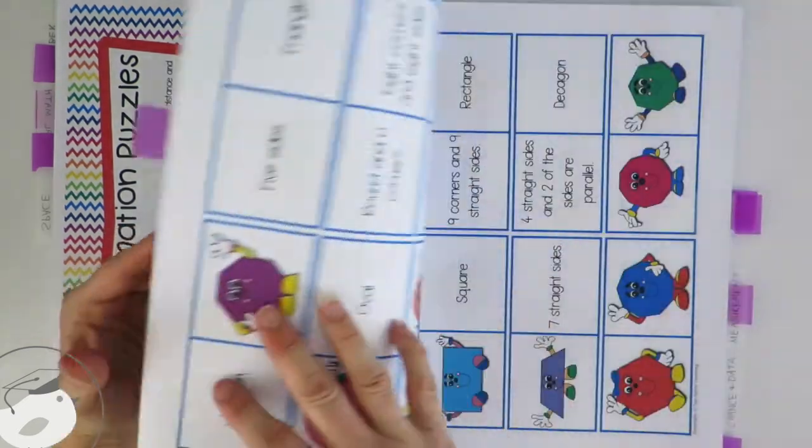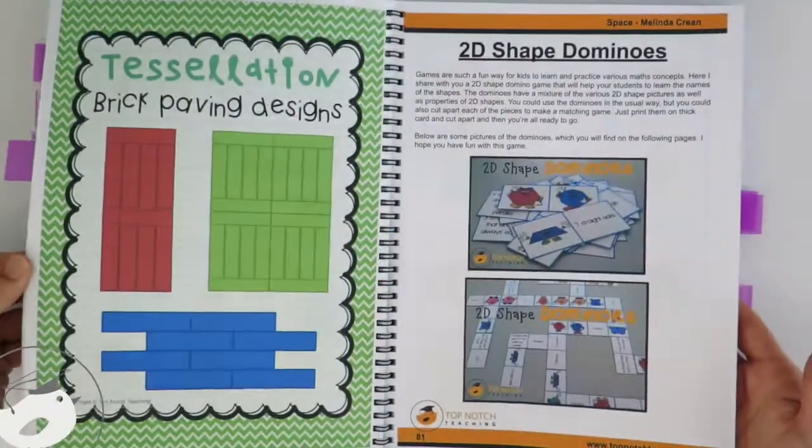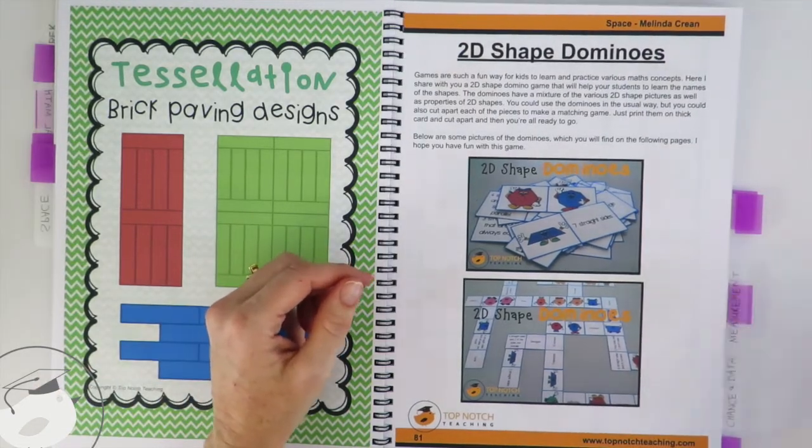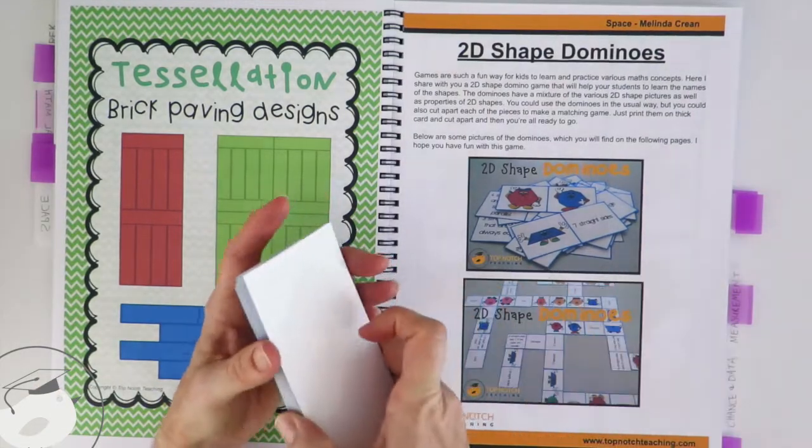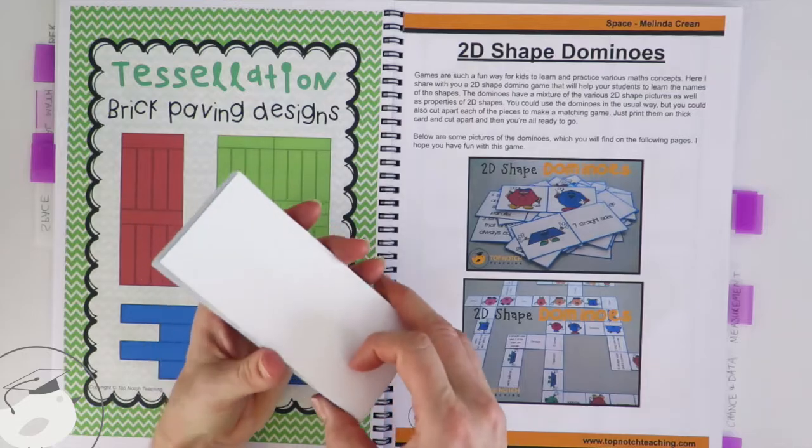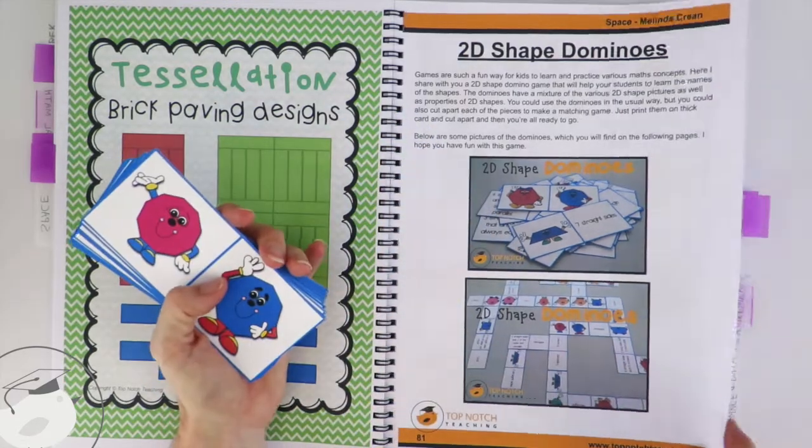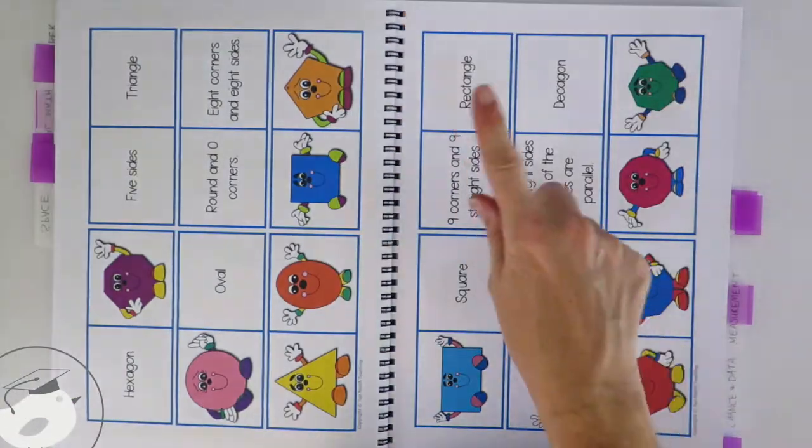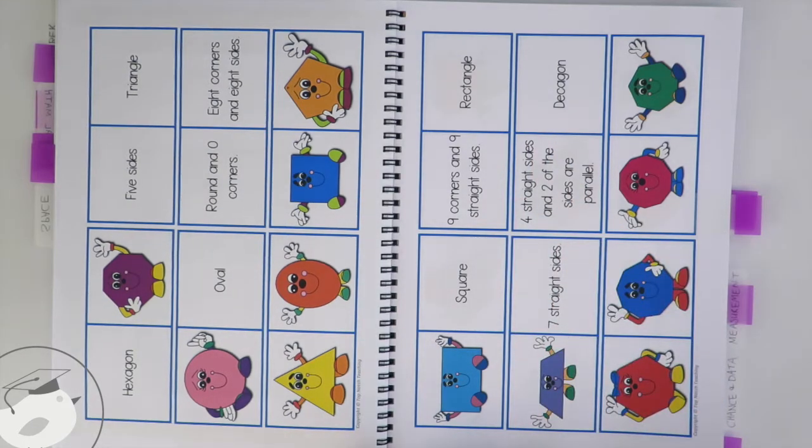The next thing that I've got to show you are the 2D shaped dominoes, and these are a great way to help kids with 2D shapes and the properties of 2D shapes as well. So you'll notice in the book you've got a heap of different domino cards.